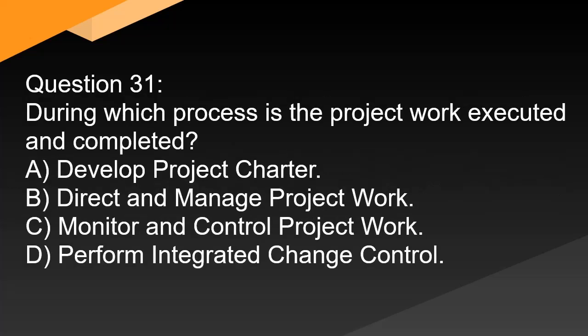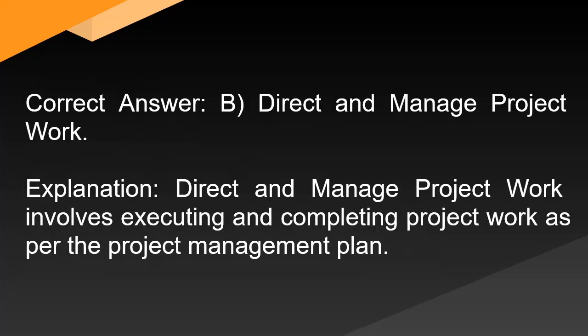Question 31: During which process is the project work executed and completed? A. Develop project charter. B. Direct and manage project work. C. Monitor and control project work. D. Perform integrated change control. Correct answer: B. Direct and manage project work. Explanation: Direct and manage project work involves executing and completing project work as per the project management plan.